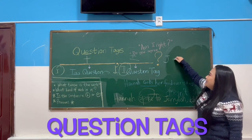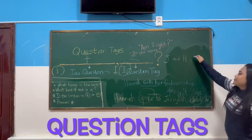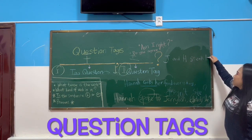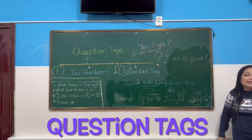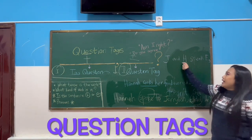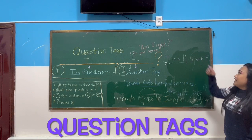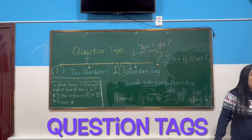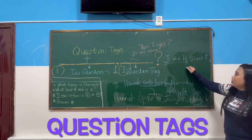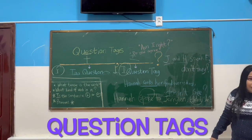'Jerry Lee and Hannah speak English.' What tense is the verb? Present simple — 'speak.' Which pronoun will 'Hannah and Jerry Lee' be? They. What is the negative of 'speak' with 'they'? 'Don't.' So the question tag will be 'don't they.' Did you understand? This is easy if you remember the four reminders.